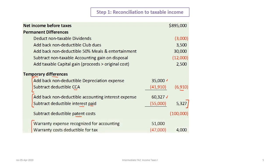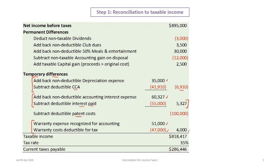The last item is the warranty. The company incurred $51,000 in warranty expense, but warranty expense is an estimate and estimates are not deductible for tax purposes — only actual costs incurred are deductible. We add back the non-deductible $51,000 warranty expense estimate and subtract the actual costs incurred of $47,000, for a net add-back of $4,000.